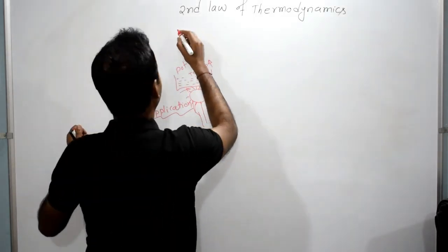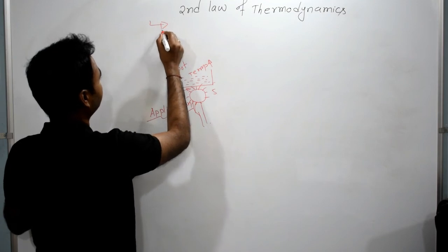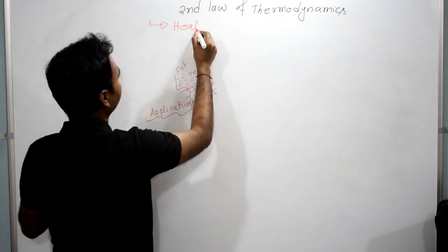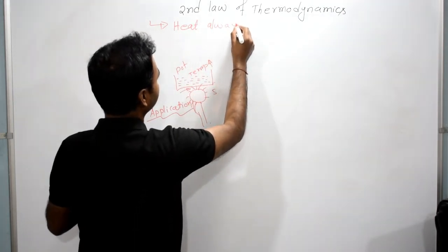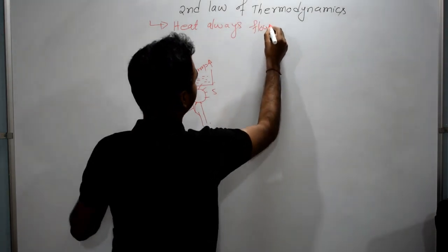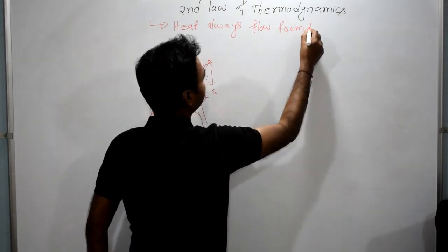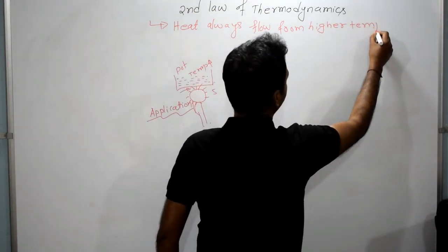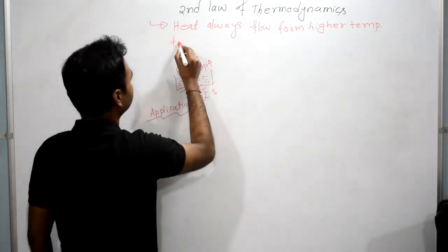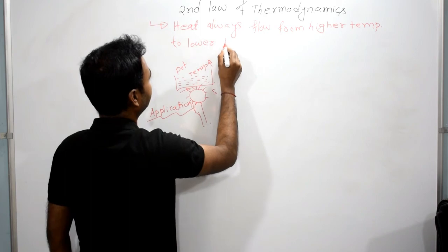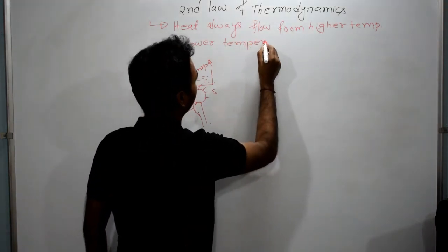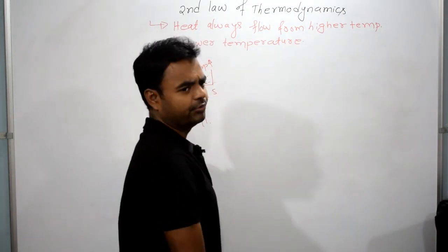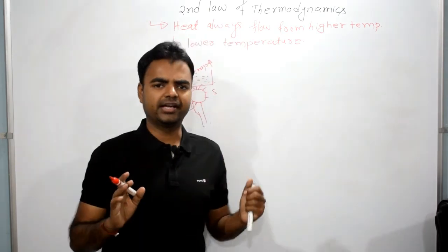If you ask me for a very simple definition of the second law of thermodynamics, we can say: heat always flows from higher temperature to lower temperature. That is one way to state the definition.